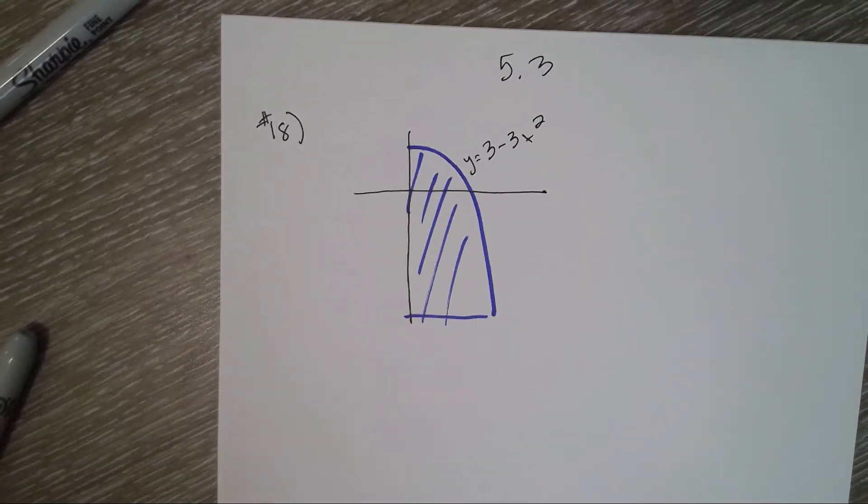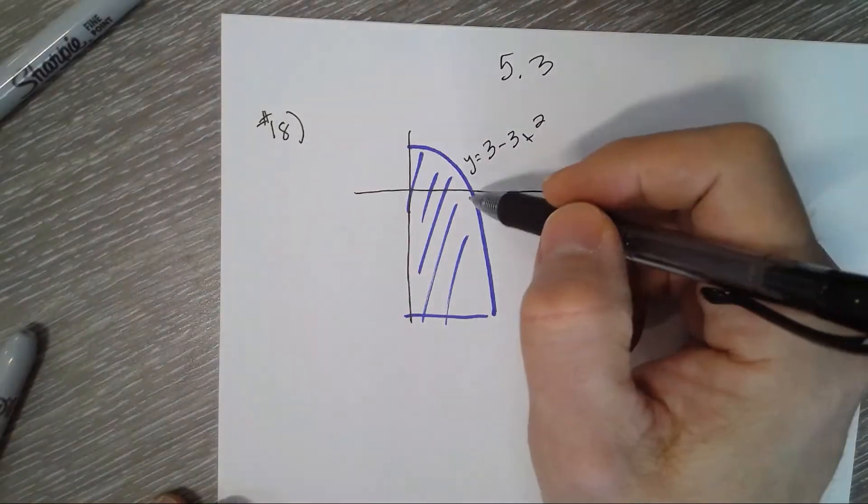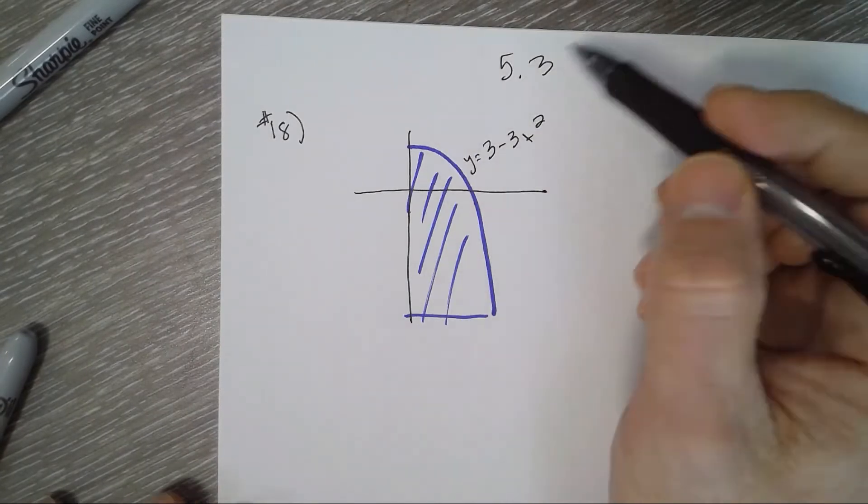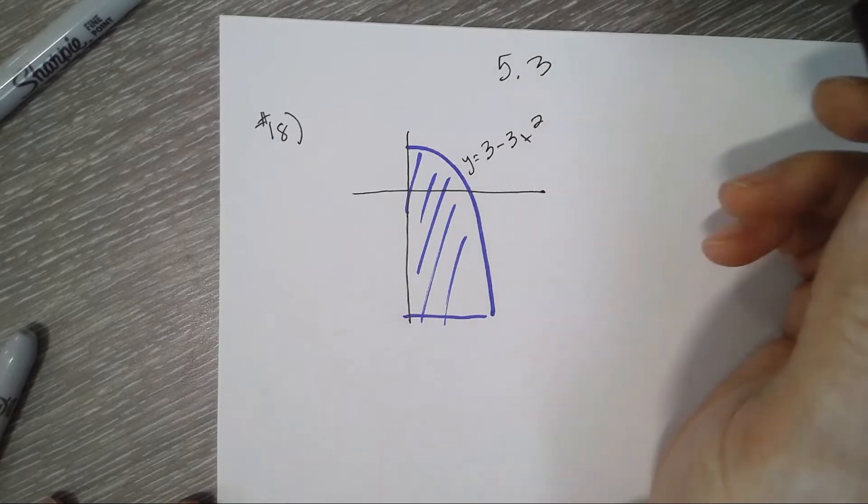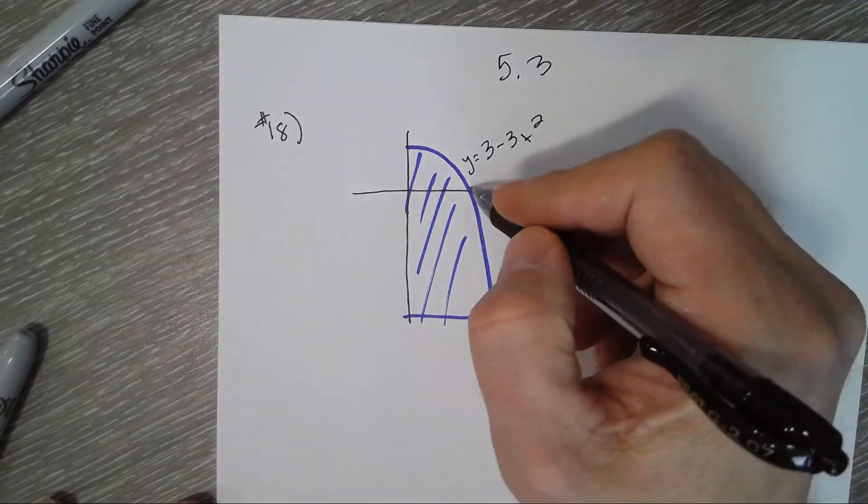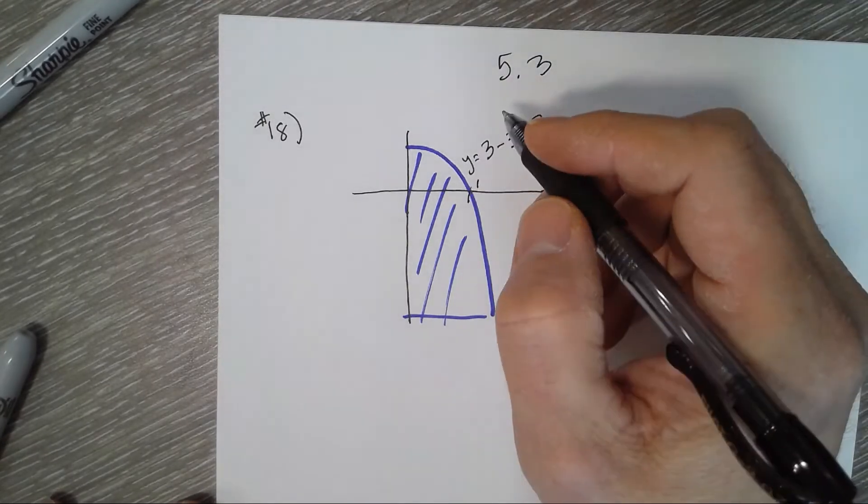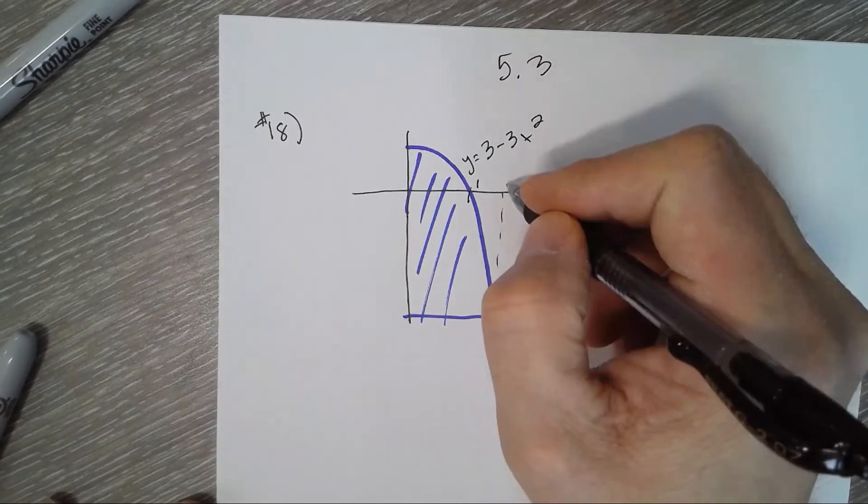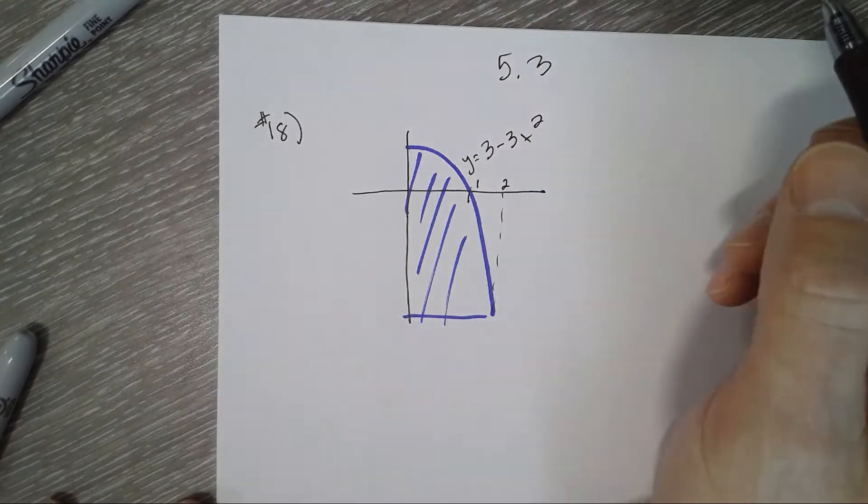5.3 number 18, trying to find the total shaded area. Remember, for total area, all areas are positive whether it's above the x-axis or below the x-axis. So kind of like geometry, how much area do we have here? So this point is one, and you can tell I'm really not drawn to scale here. That's two.